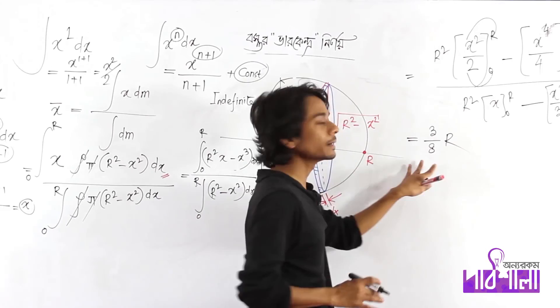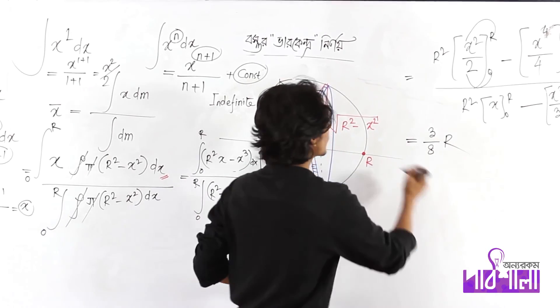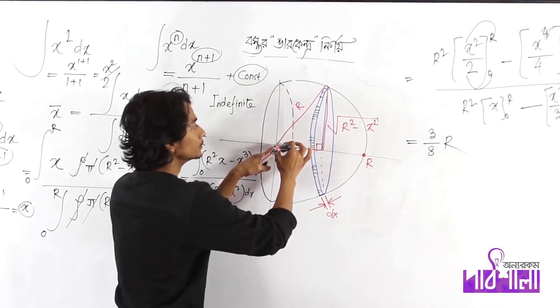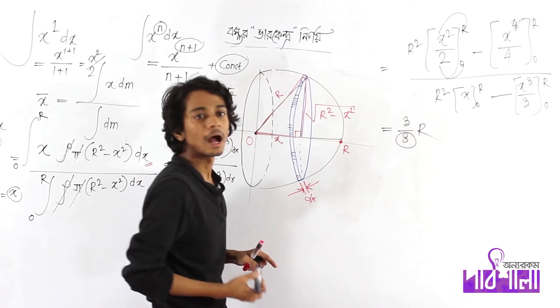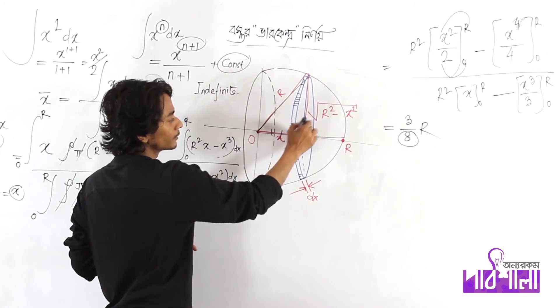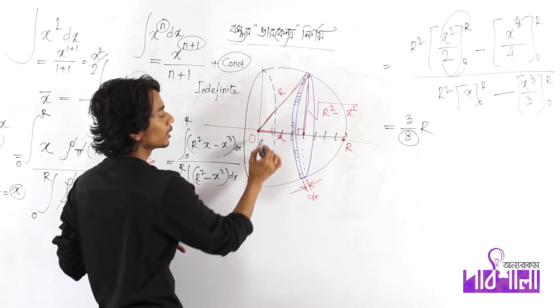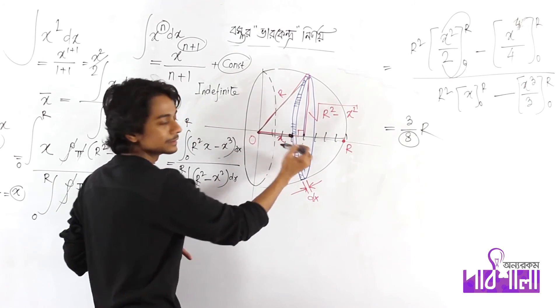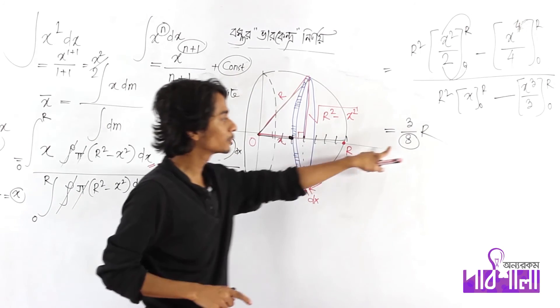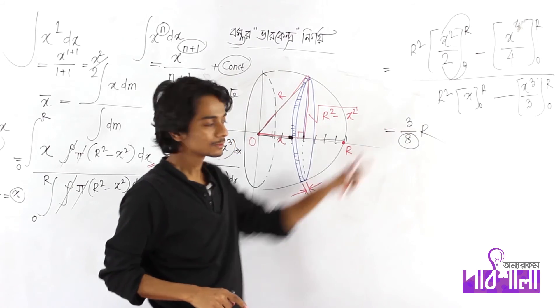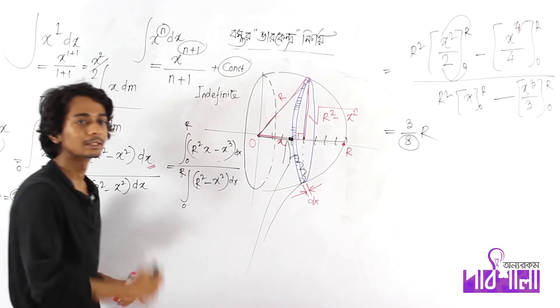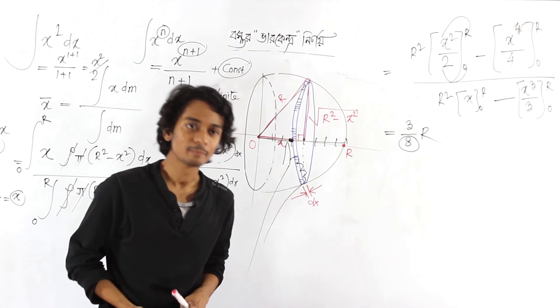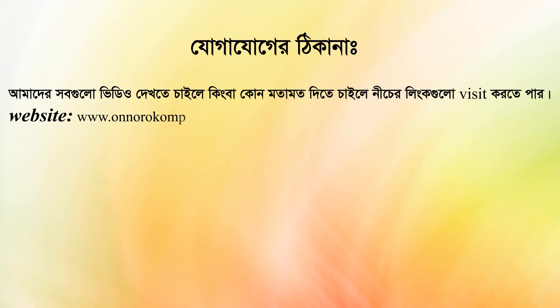3 by 8 into R. 3 by 8 into R. This is the total value of R. How many times do you do this? 8 times. How many times do you do this? 3 times. 8 times. So let's take a look at this. The final answer is 3R/8.